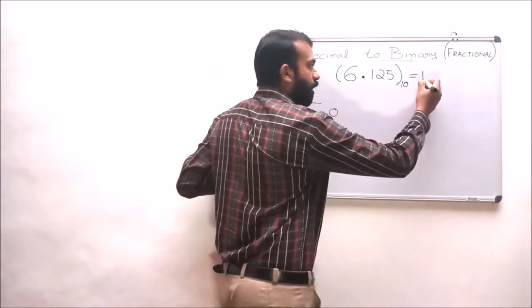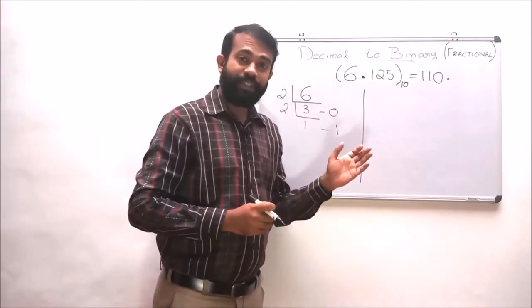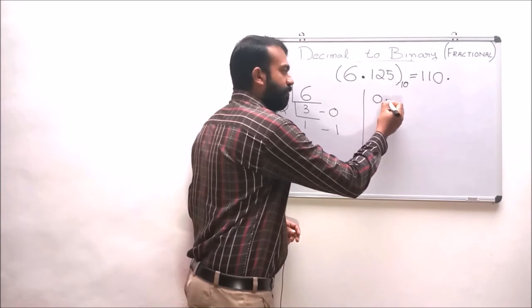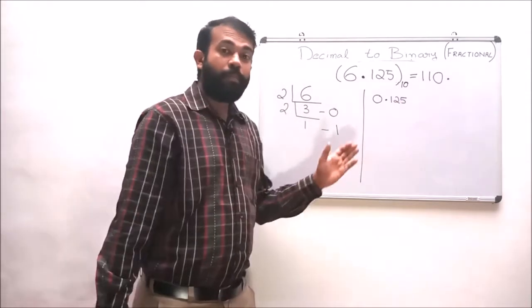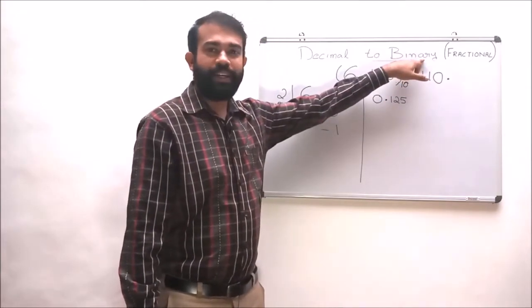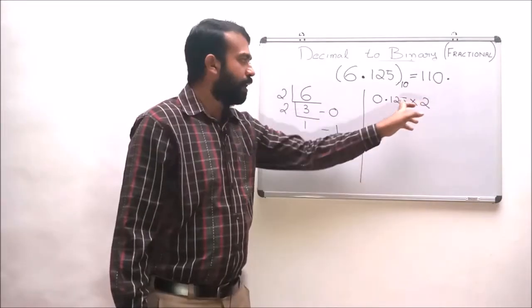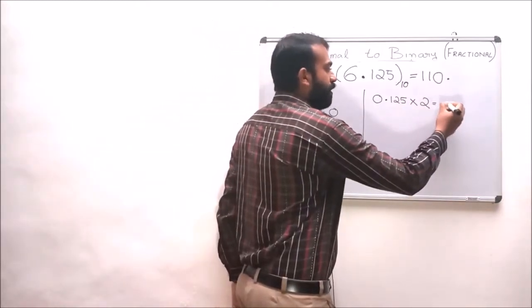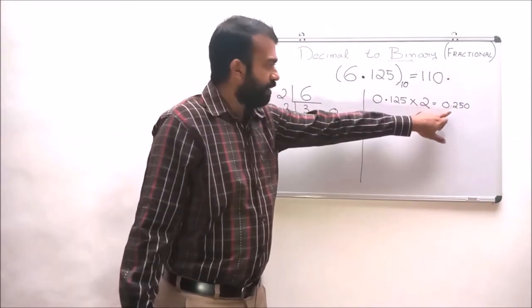We write the whole number result as 110 followed by a point. For the fractional conversion, we consider the fractional portion 0.125. We multiply this fractional portion repeatedly by the binary base value 2. Multiplying 0.125 by 2, we get 0.250.